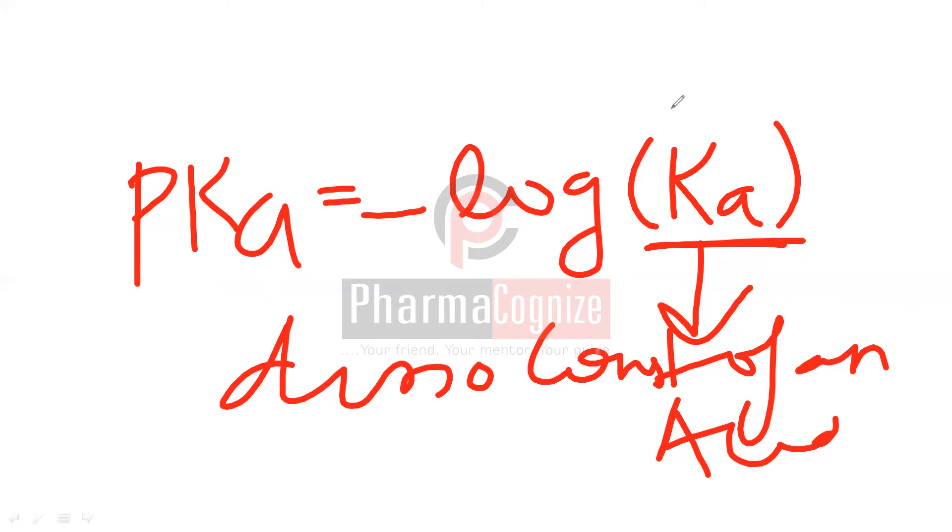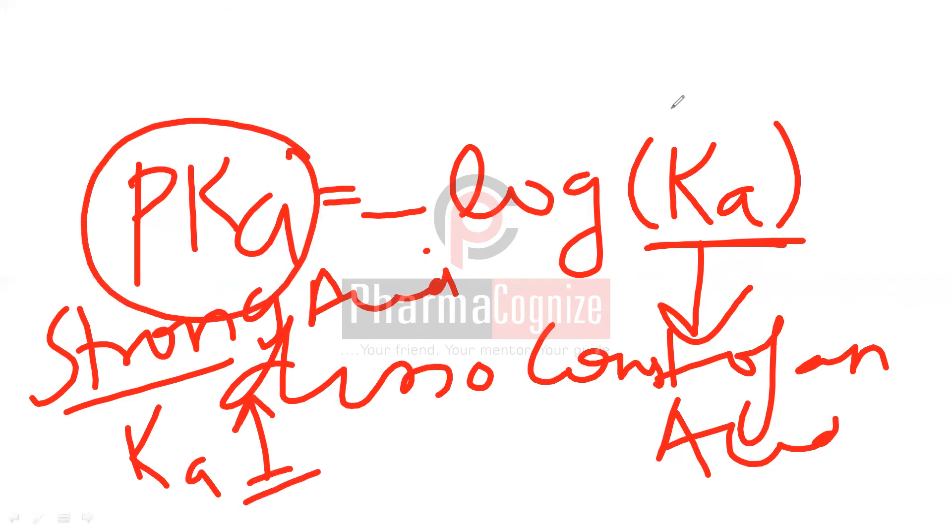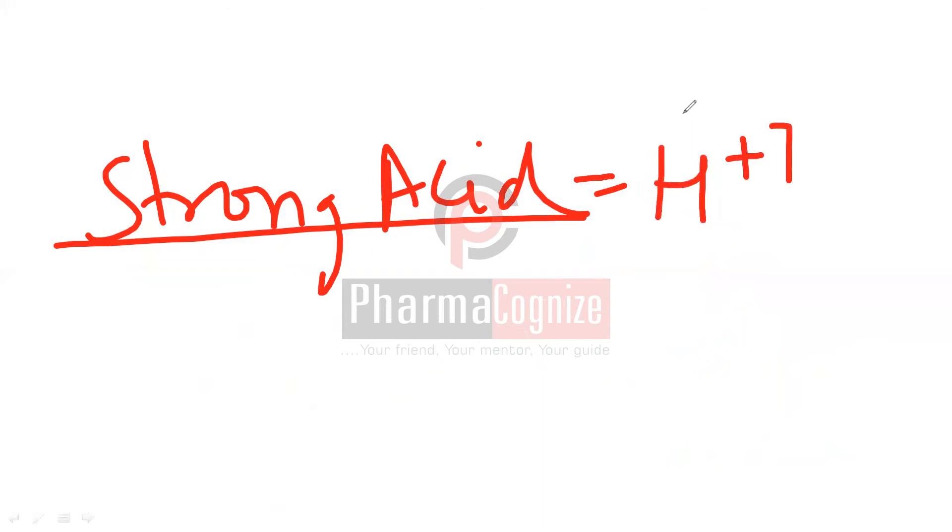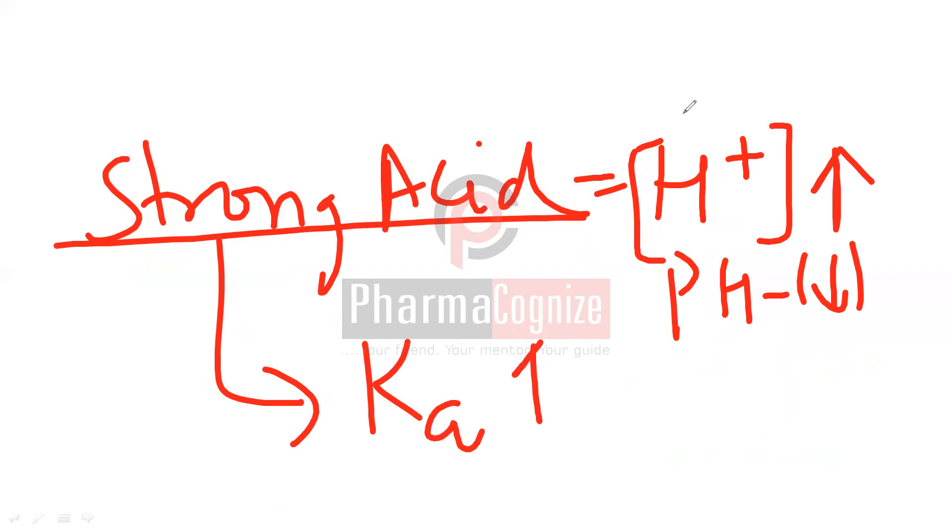But in weak acid cases, ionization is not 100%. So their dissociation constant is low. So if we say strong acid, in that case Ka would be high. So the pKa is low. Because there is a negative relationship, there is an inverse relationship. So strong acid means the pKa is very low.